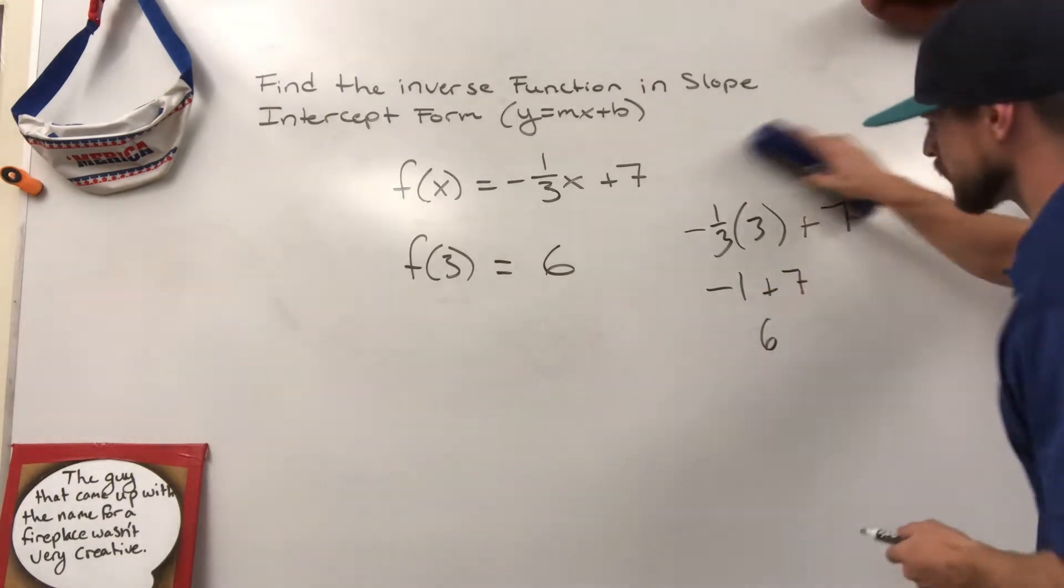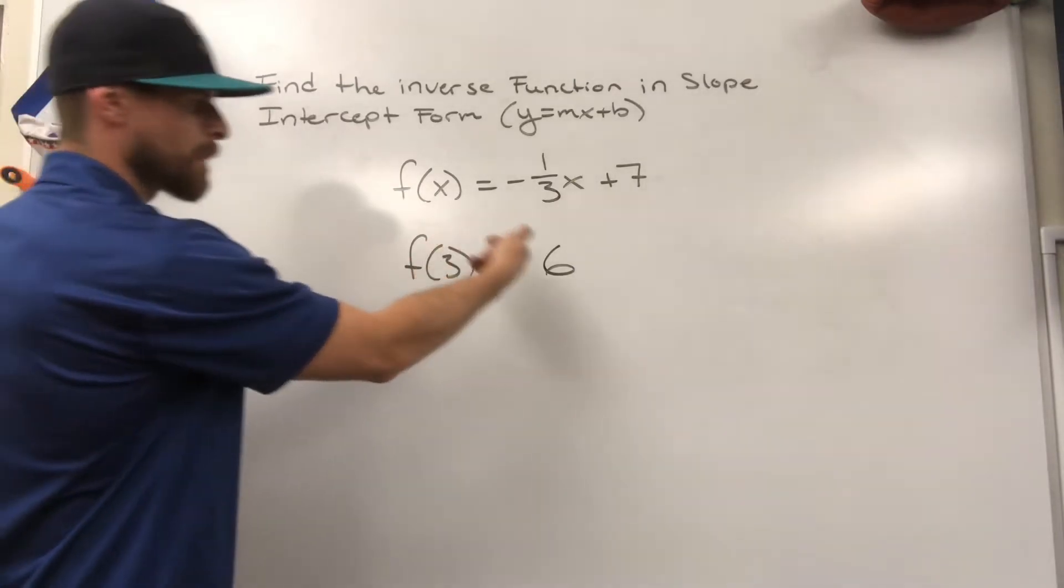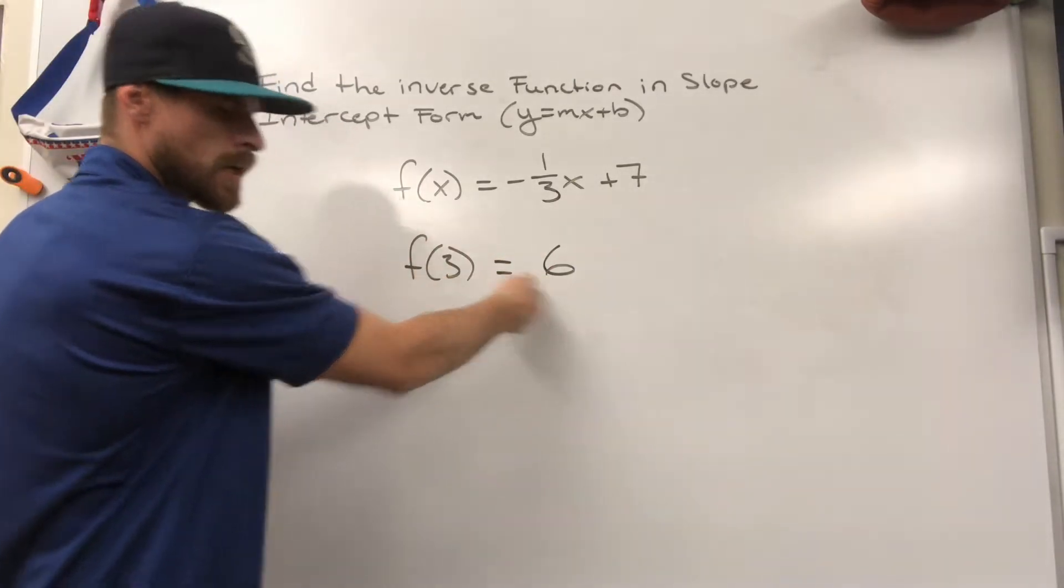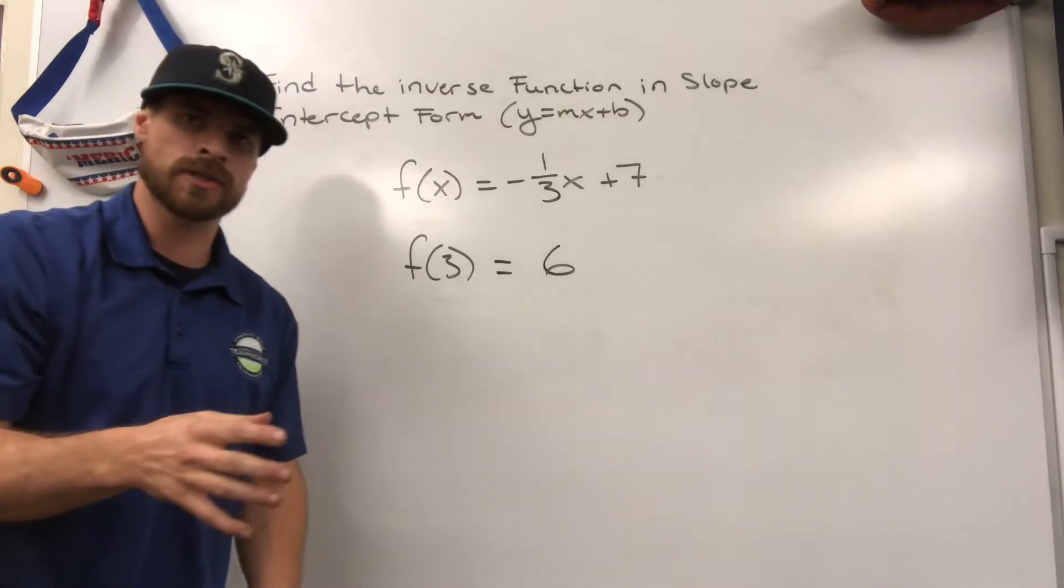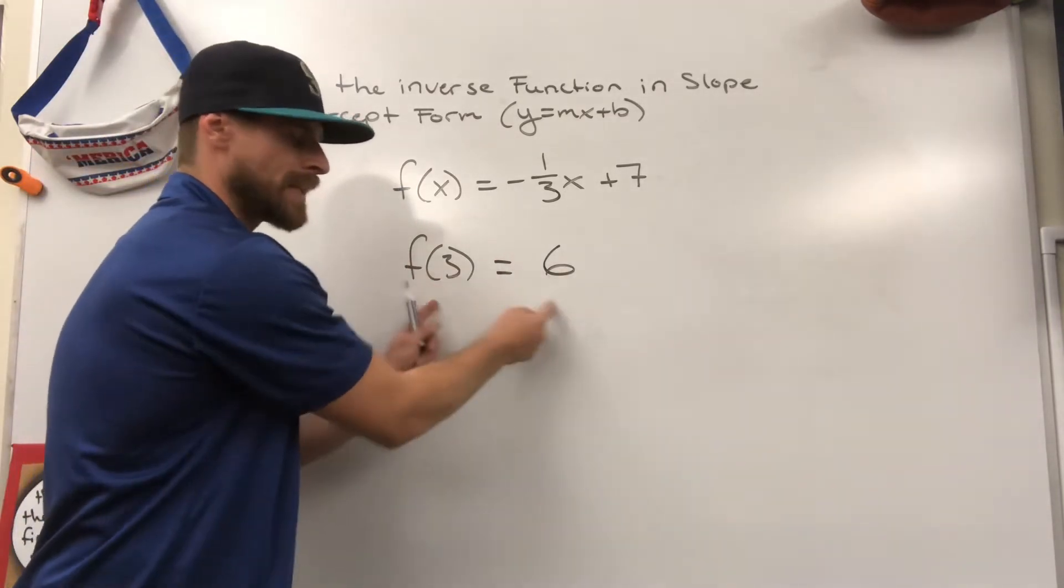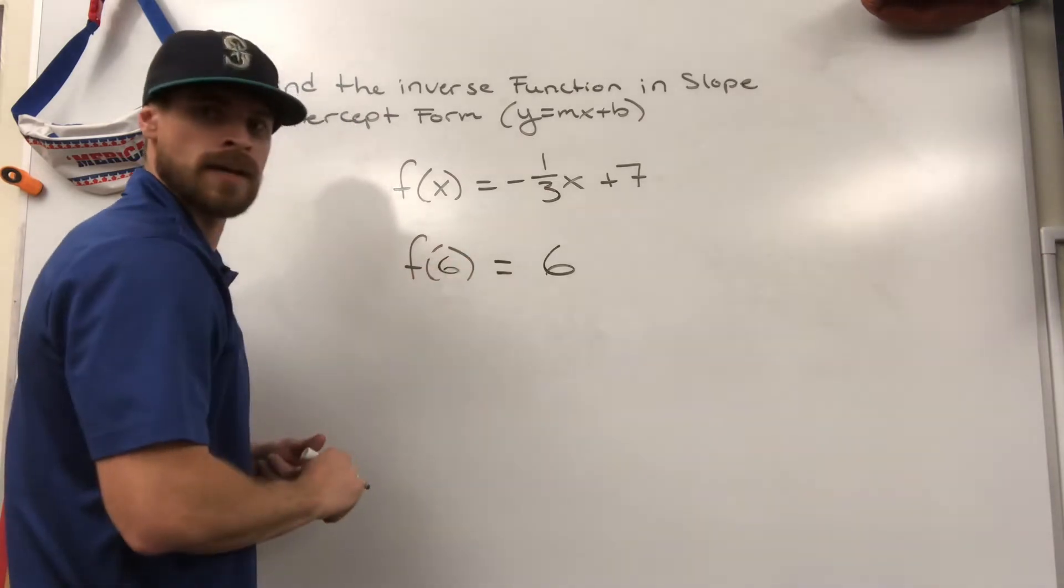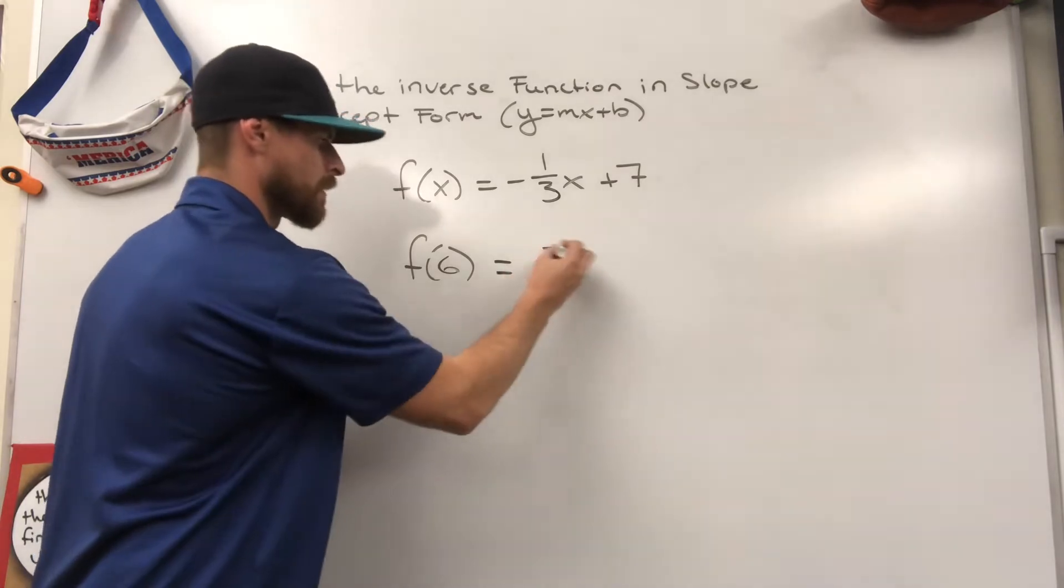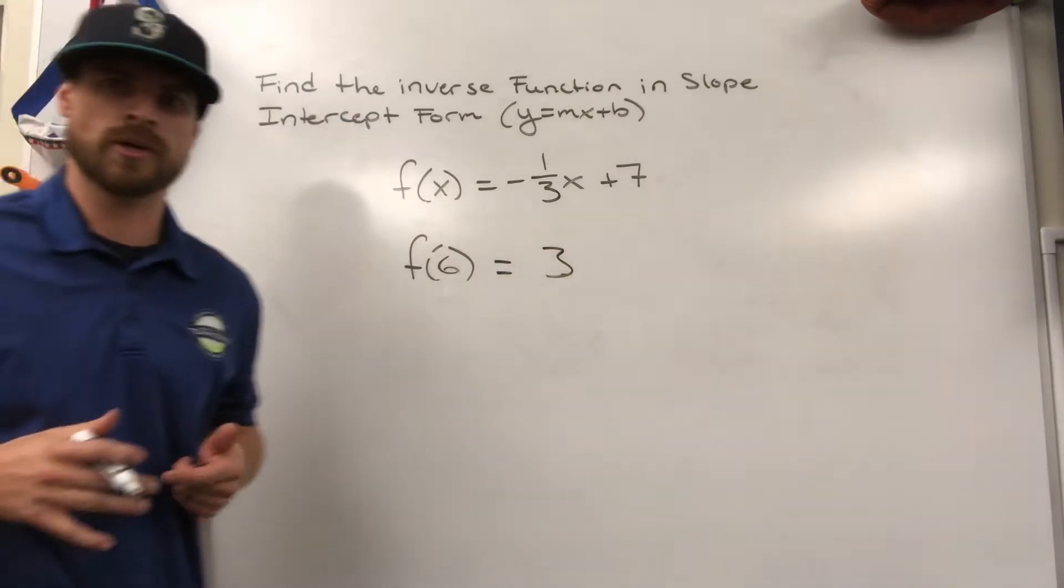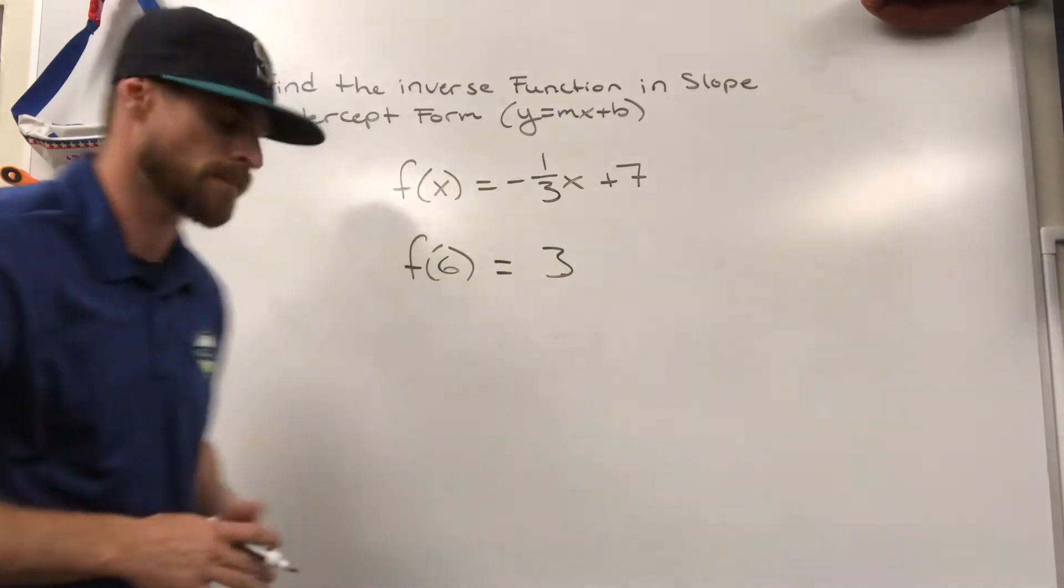So now that we know plugging three in for x produces an output of negative six, our inverse function would flip-flop our x and our y's. Meaning if we were to put in a six, it would produce a three. That's what we're trying to do when we're inverting a function.